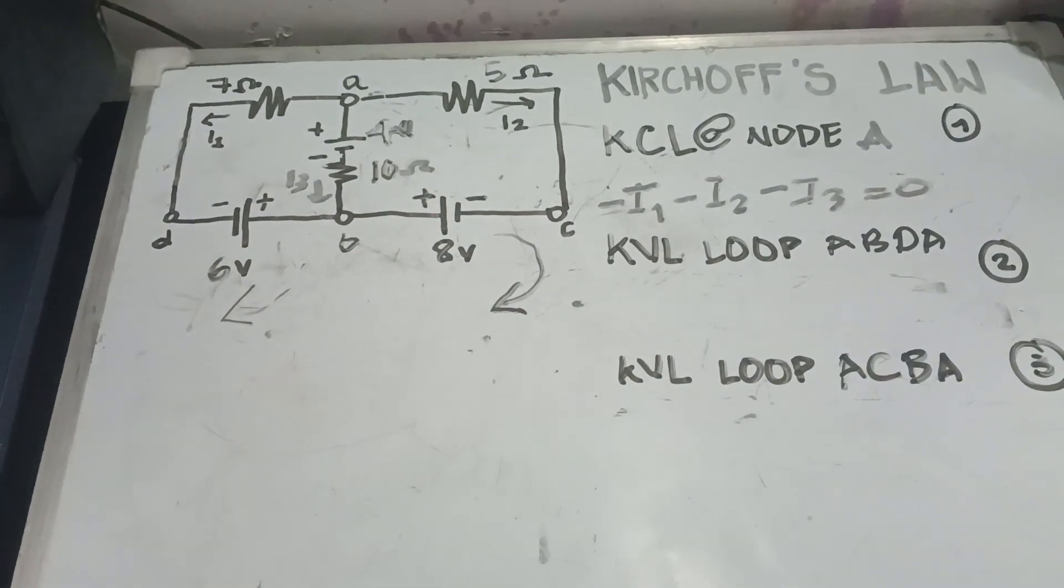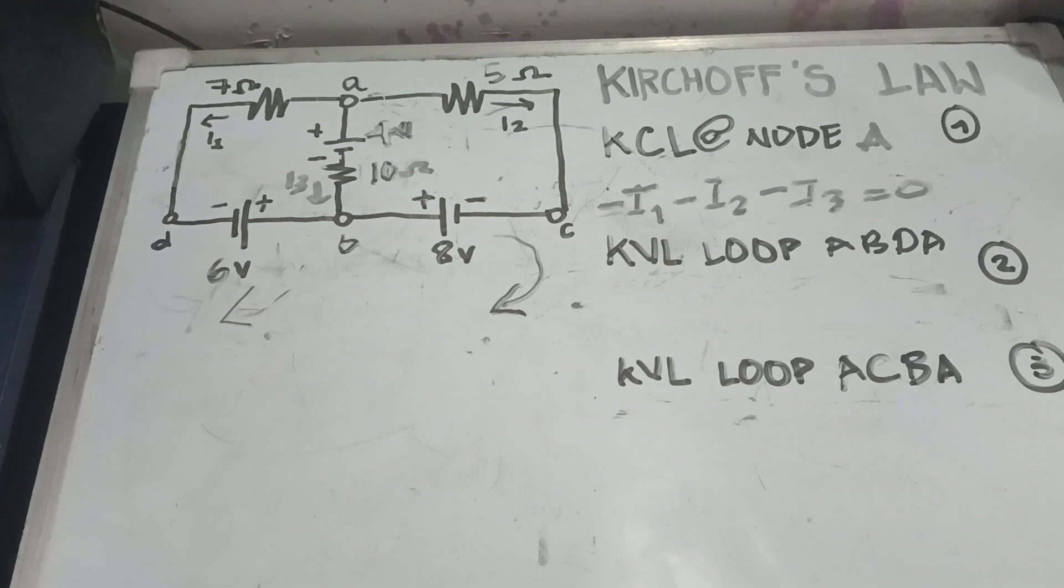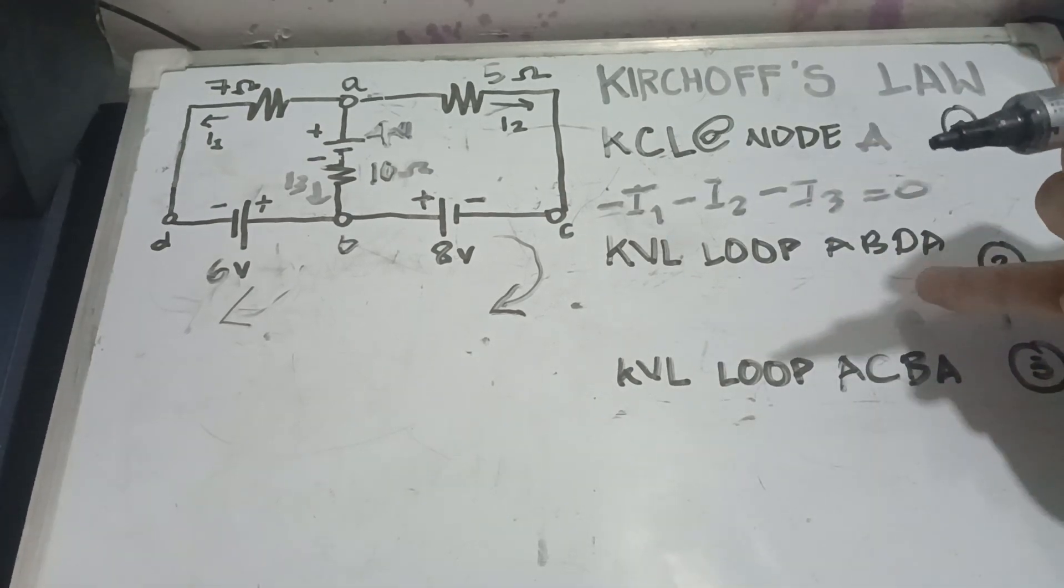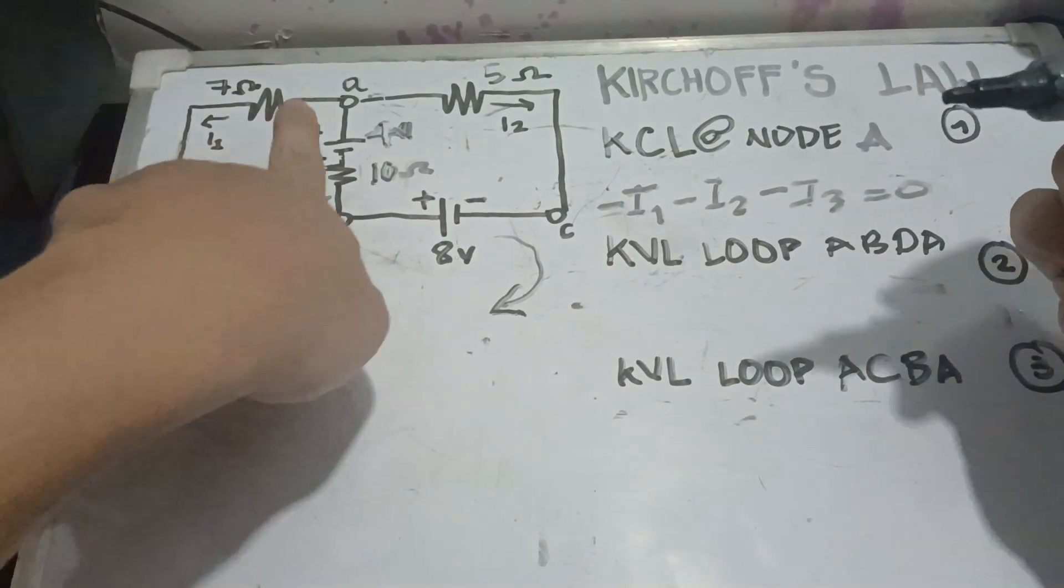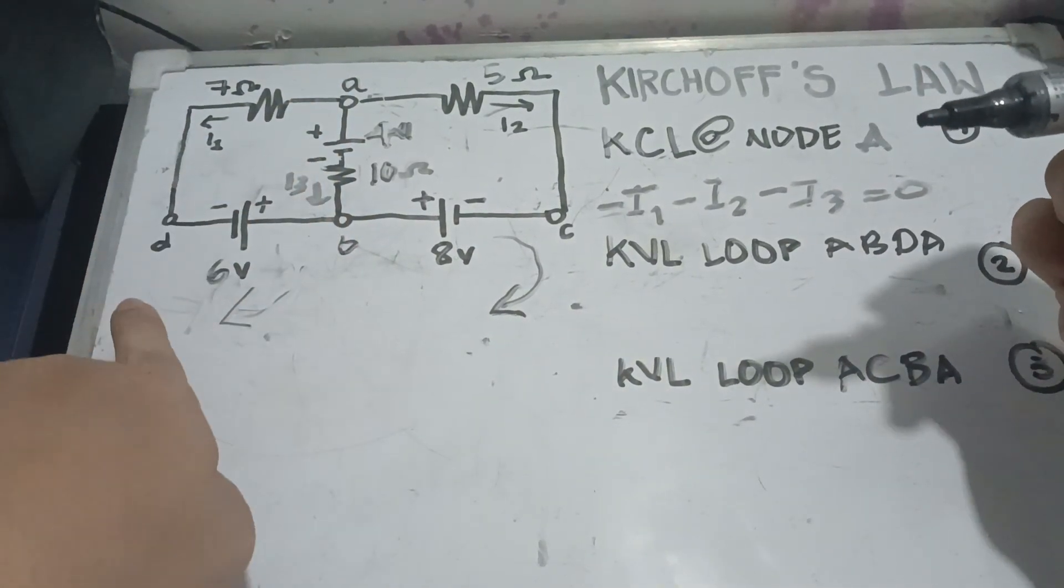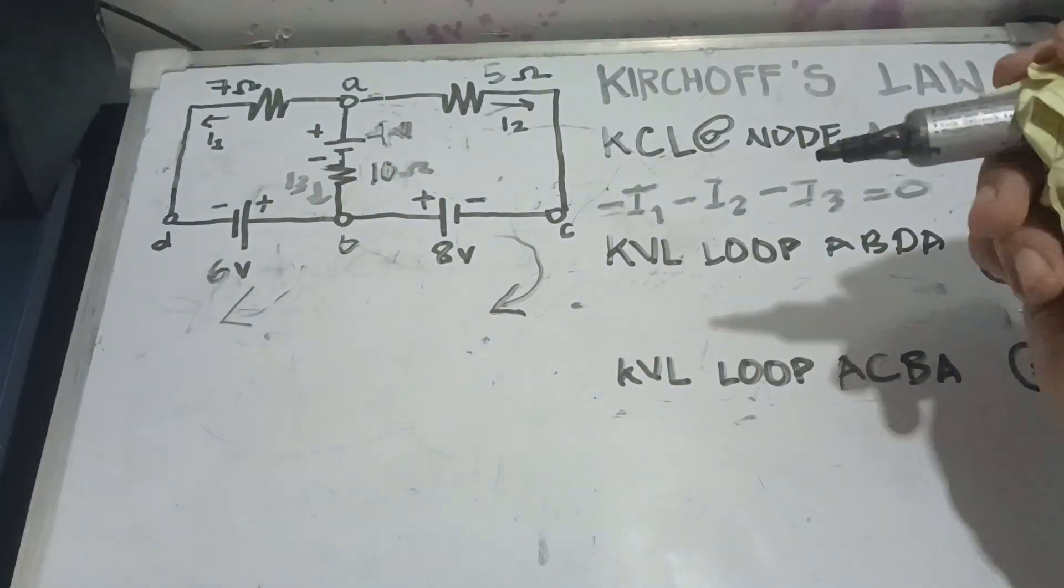Now, we need to work on our voltage. So, Kirchhoff's voltage law. We have pre-selected loops: A, B, D, A going back to our starting point which is A.